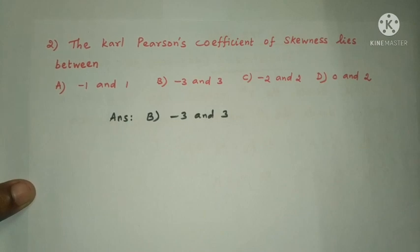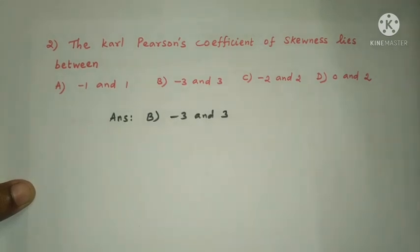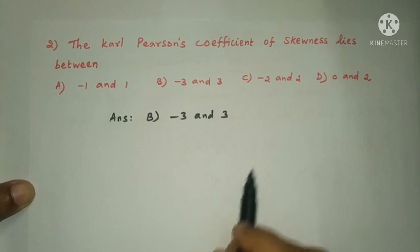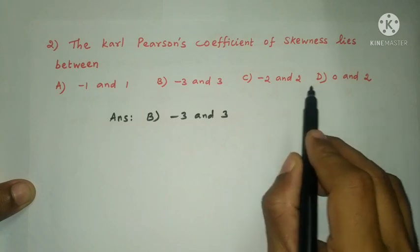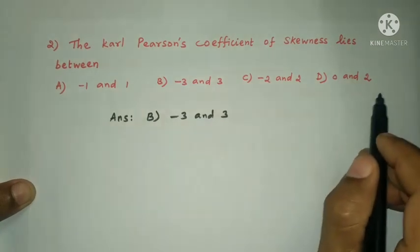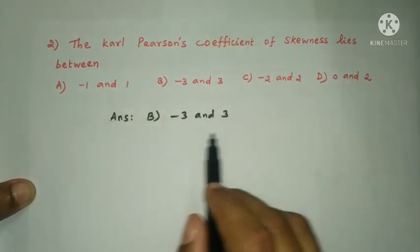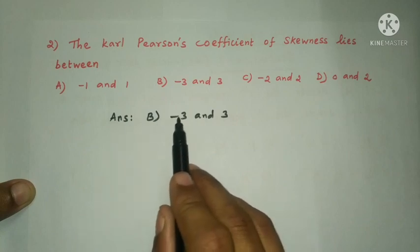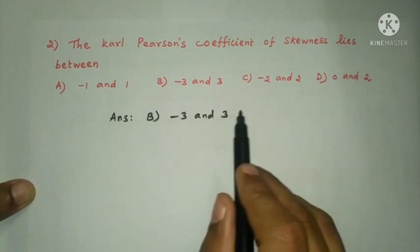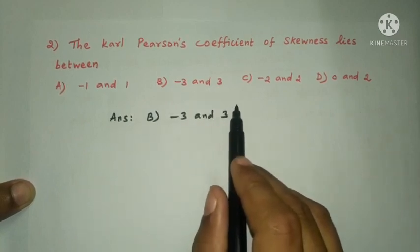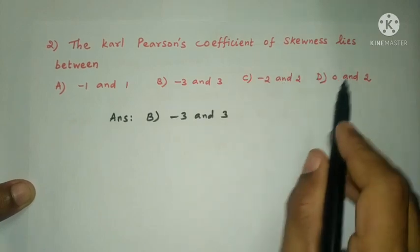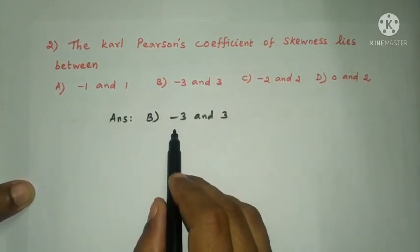For the Karl Pearson coefficient of skewness: Option B is -3 and +3, Option C is -2 and +2, Option D is 0 and 2. The answer is Option B: the Karl Pearson coefficient of skewness lies between -3 and +3.